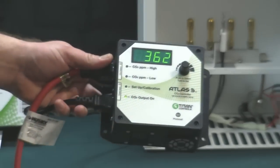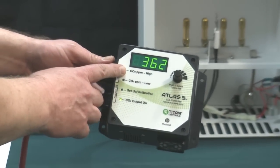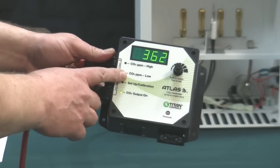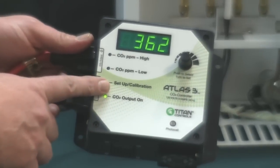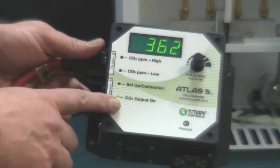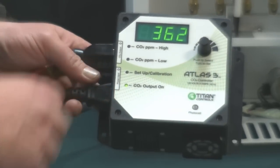The Atlas III has a high parts per million setting, a low parts per million setting, this is known as a hysteresis, it has a setup and calibration feature, and as you can see, it has a light to tell you when your CO2 output is on.